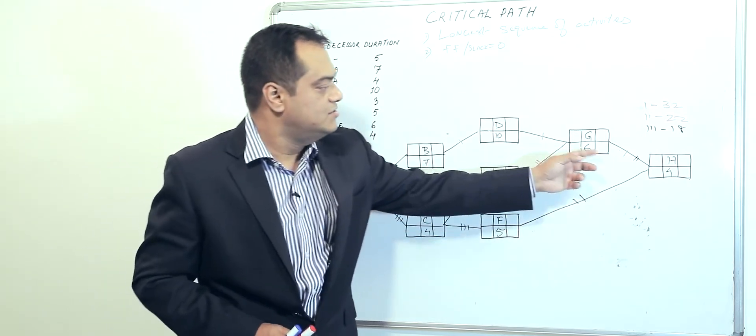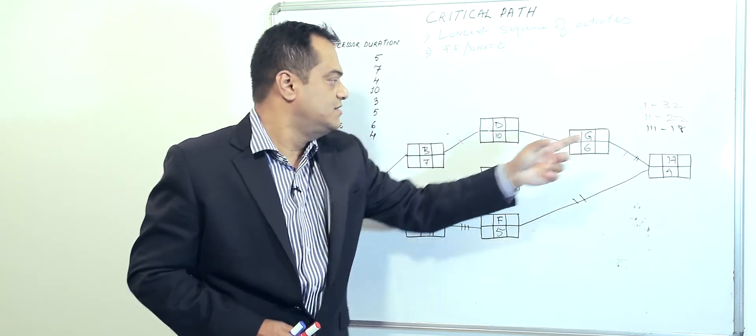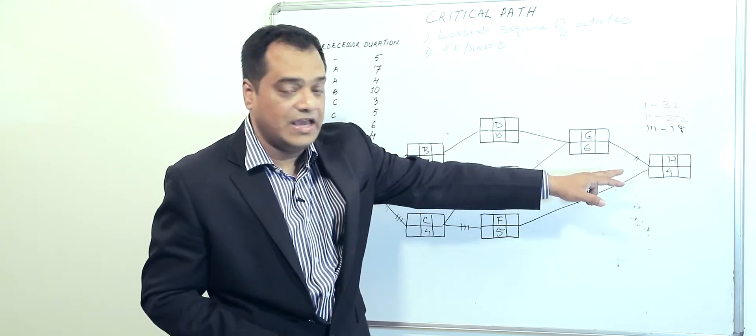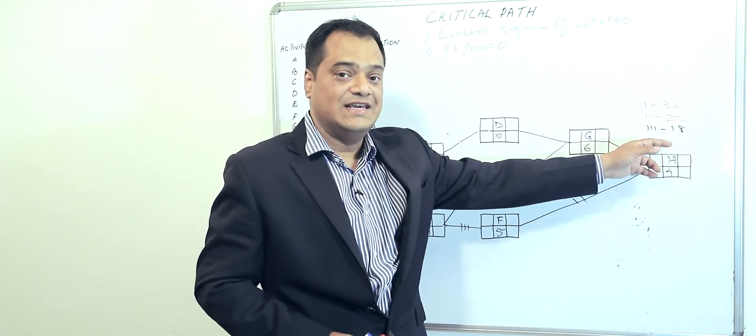Then if we see the next part, which is A, C, E, G, and H, this part takes about 22 days. And then if we see the last one, which is A, C, F, and H, this part takes about 18 days time.